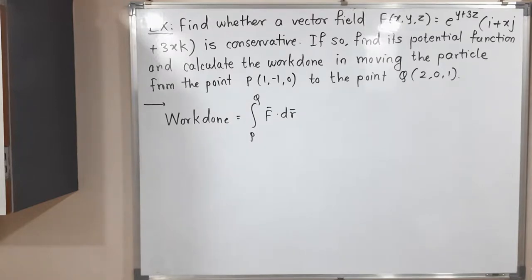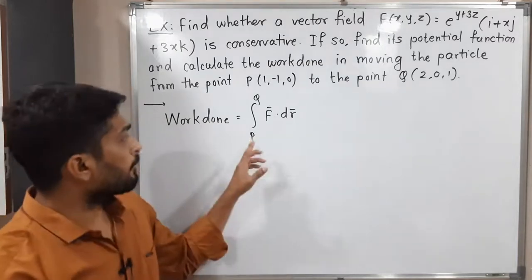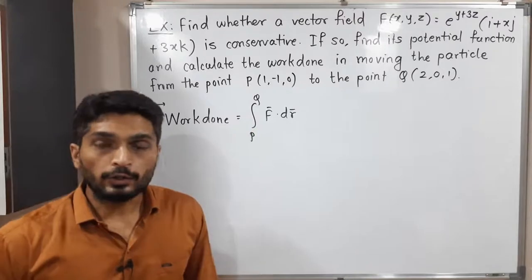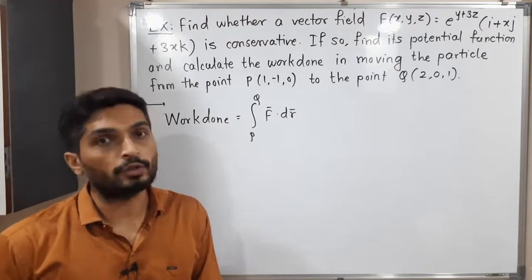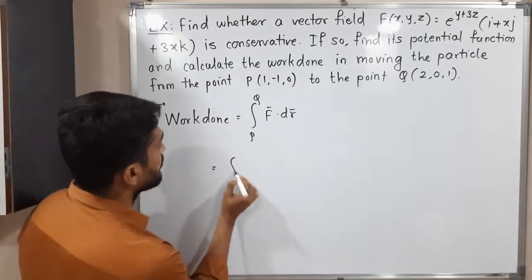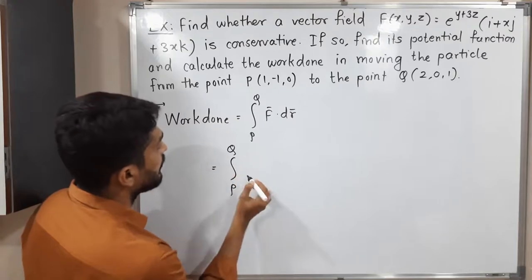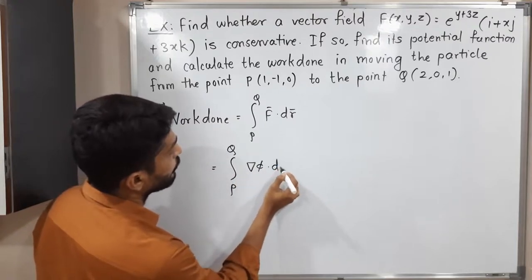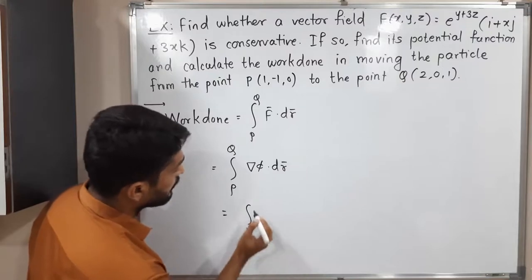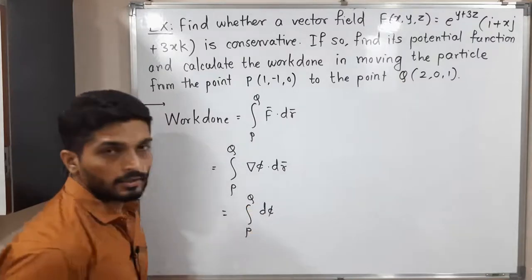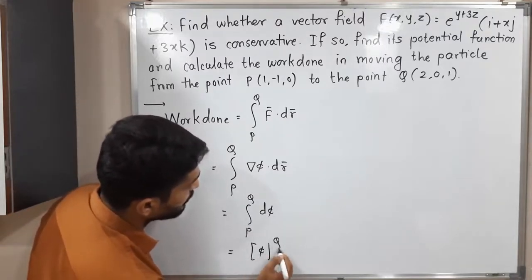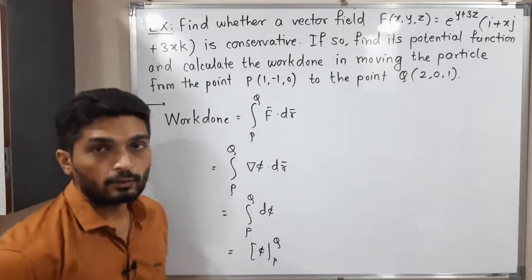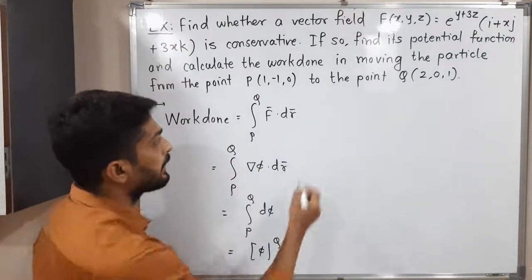Now for the last sub-question: finding the work done. The formula is the line integral of F̄ · dr̄ from P to Q. Since we have proved F̄ is conservative, this line integral is independent of path and depends on endpoints only. Therefore we can write this equals the integral from P to Q of ∇φ · dr̄ = integral of dφ, which evaluates simply to φ with limits P to Q.